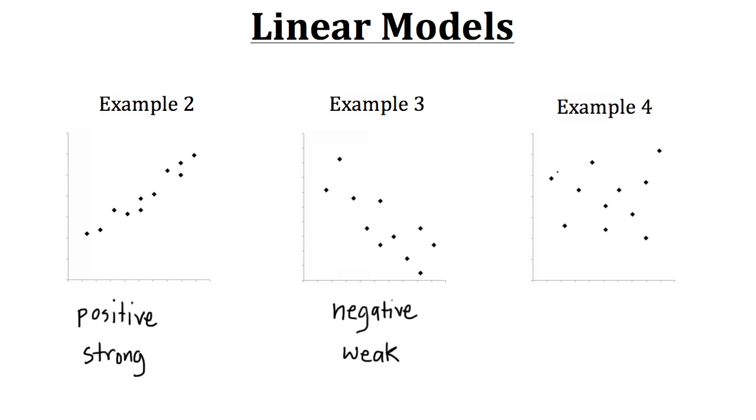Now what about example four here? We have a bunch of data points, but it doesn't look like that they have any specific trend, whether it be a positive or a negative. It just looks scattered all over the place. When we have a scatter plot that looks somewhat like this, it has no particular trend. So there's some of the basics behind a scatter plot.